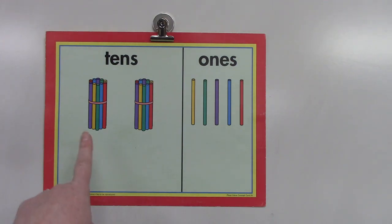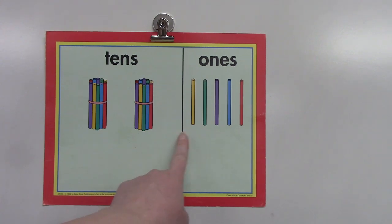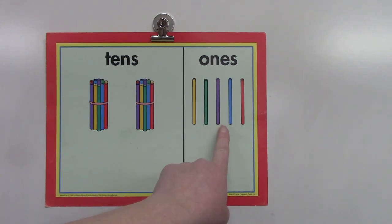Let's count this together. 10, 20, 21, 22, 23, 24, 25.